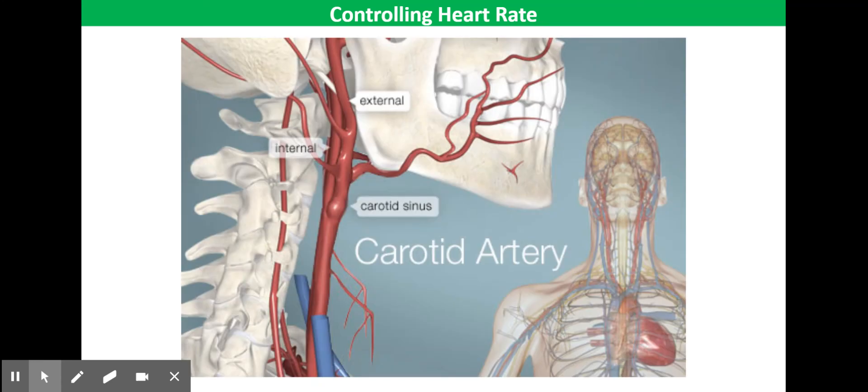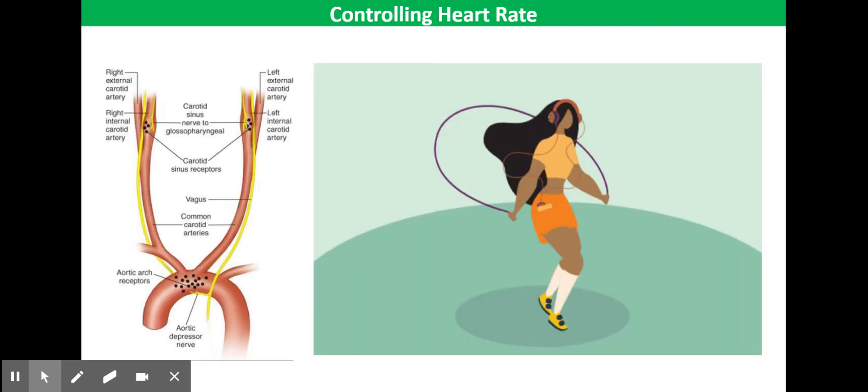We also have chemoreceptors. Chemoreceptors in the carotid arteries, as well as in the aorta and the brain, are responsible for monitoring the pH of the blood. When we exercise, the muscles produce more carbon dioxide. Some of this reacts with the water, which will affect the transport of oxygen. The change in the pH is detected by the chemoreceptors, which will send action potentials to the cardiovascular centre. And this will then cause an increase in heart rate.